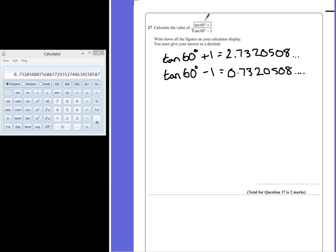So once we've got those two values we can work out what the tan of 60 degrees plus 1 divided by the tan of 60 degrees minus 1 would be equal to. Now you can type in all the numbers that you've written down and that way you'll get a nice accurate result.